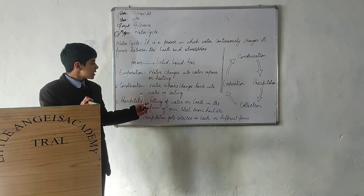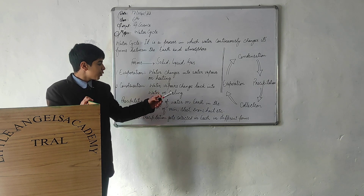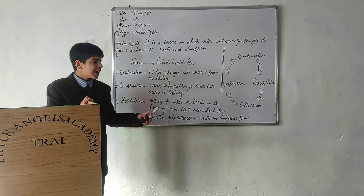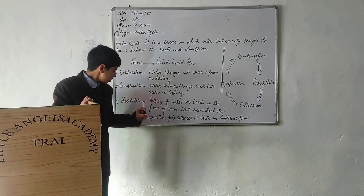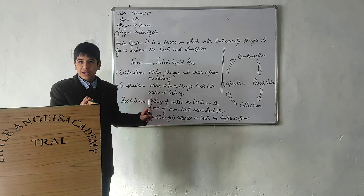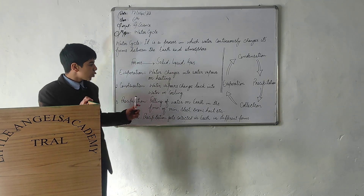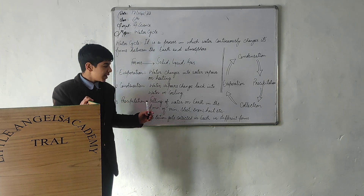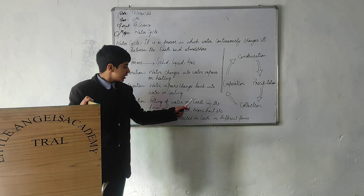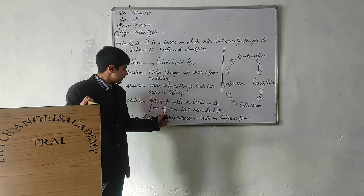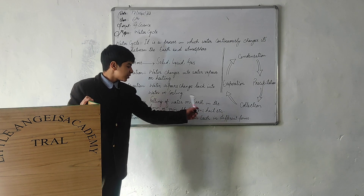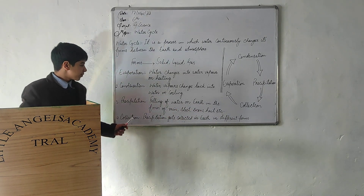Condensation is a process when water vapor changes back into water on cooling, which gets accumulated in clouds. The third one is precipitation. When clouds become heavy and could not hold the water, it can fall to earth in the forms of rain, heat, snow, hail, etc.